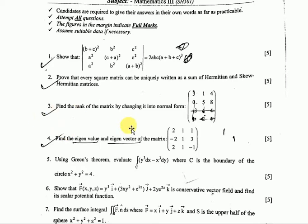Question number 3: Find the rank of the matrix by changing into normal form. The matrix is [3 1 4; 2 0 5; 8 0...]. You need to convert this to echelon form.